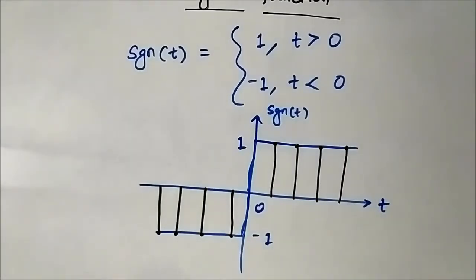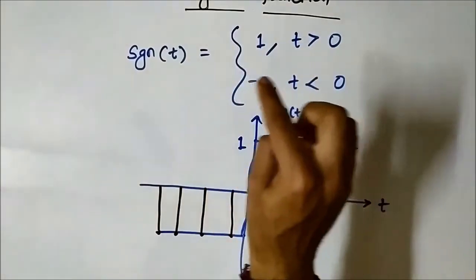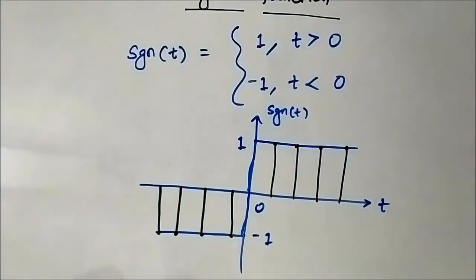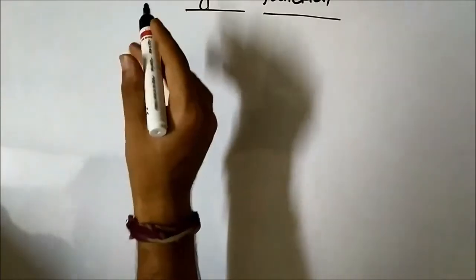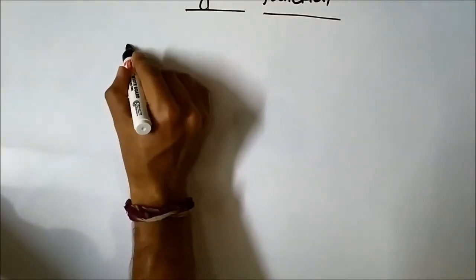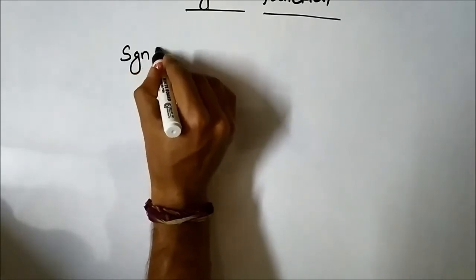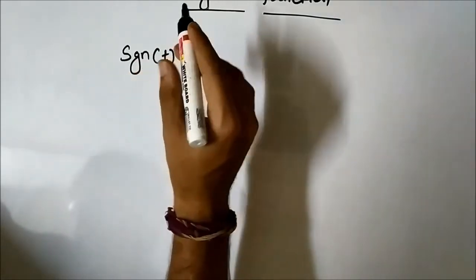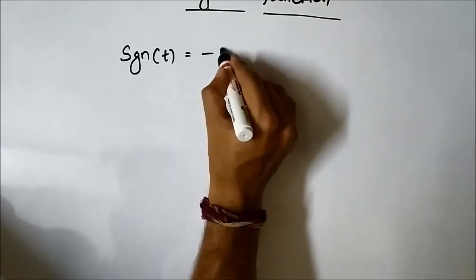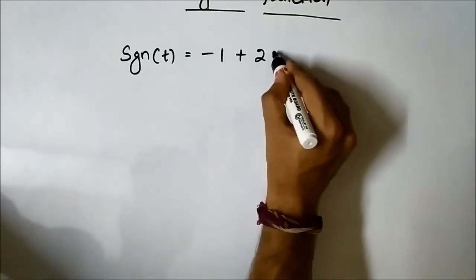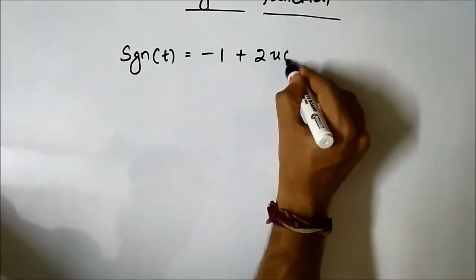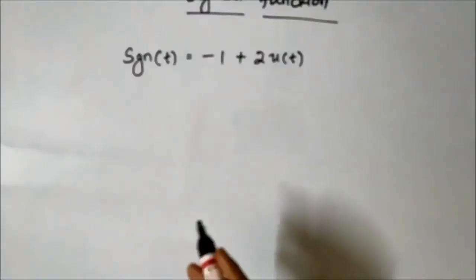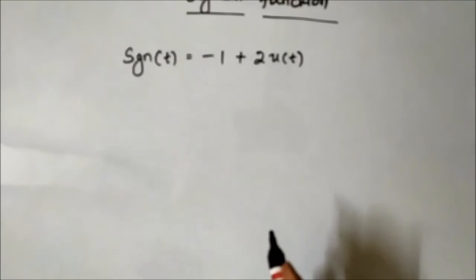The amplitude will remain constant: plus 1 for positive time and minus 1 for negative time. This is the signum function — very simple and easy to remember. Another important thing: the signum function is also represented in terms of the unit step function, as minus 1 plus 2 times the unit step function. Let us see how that is possible.